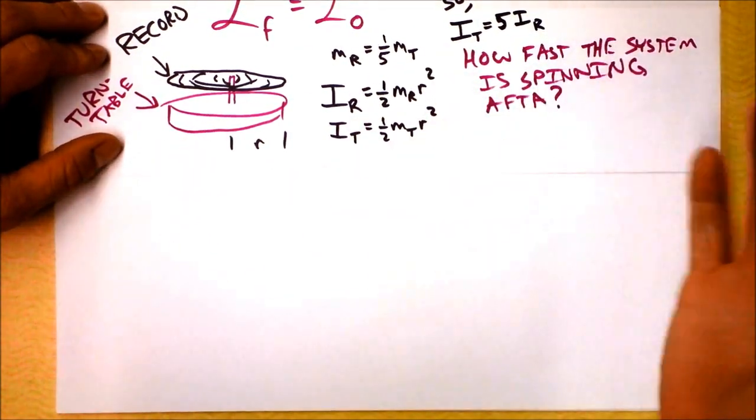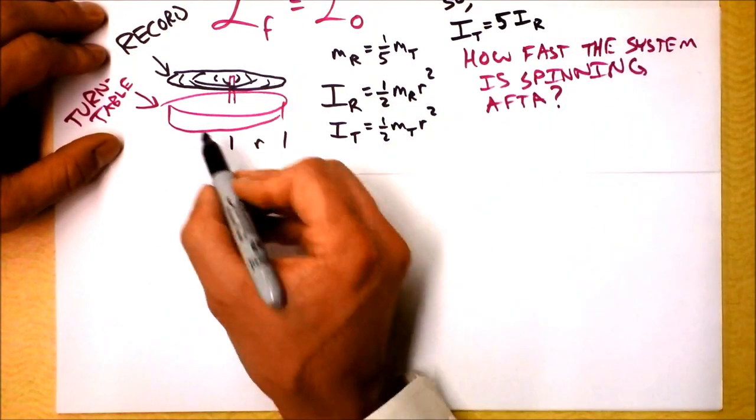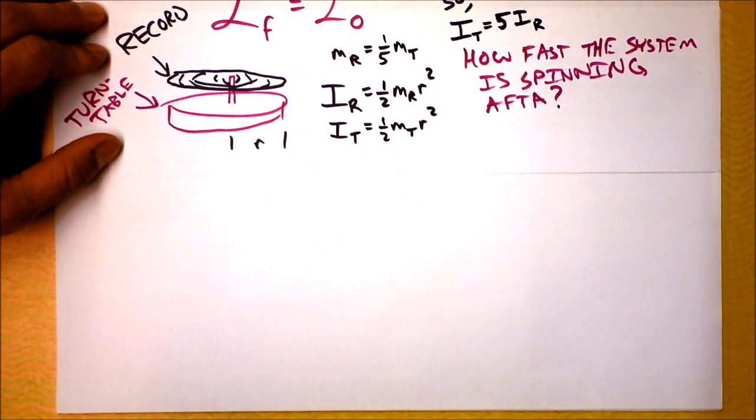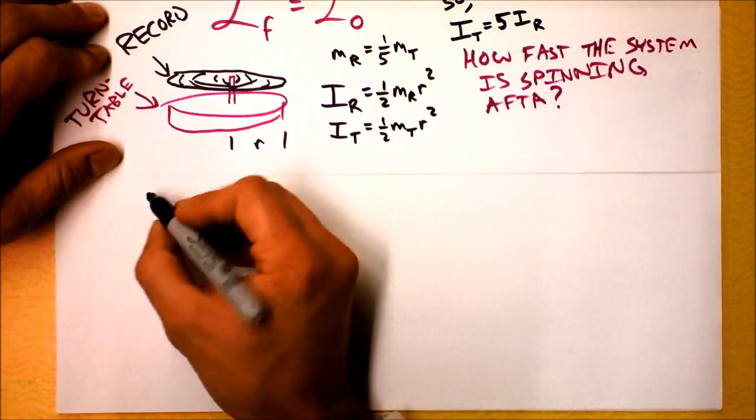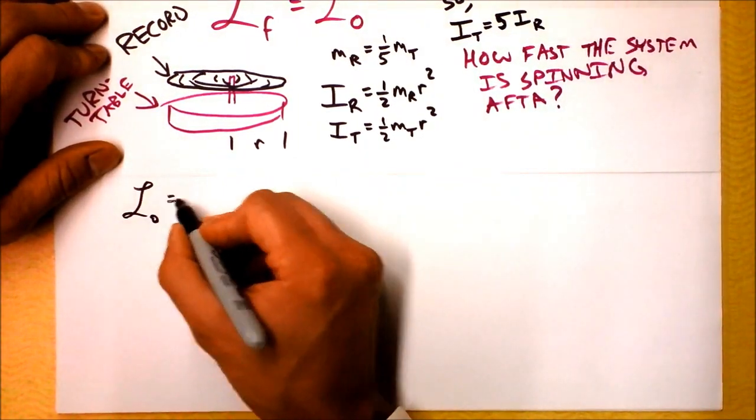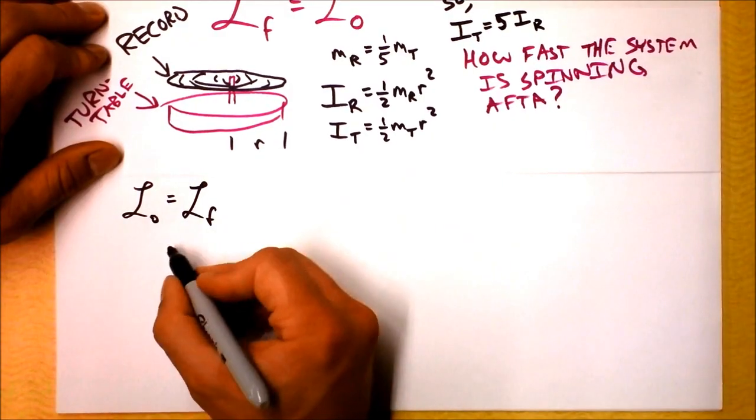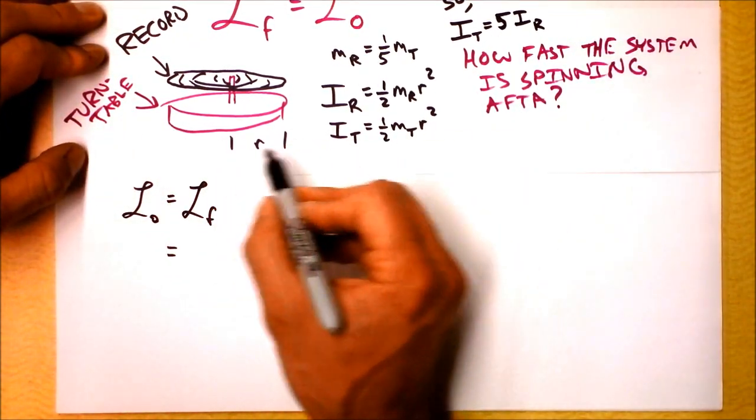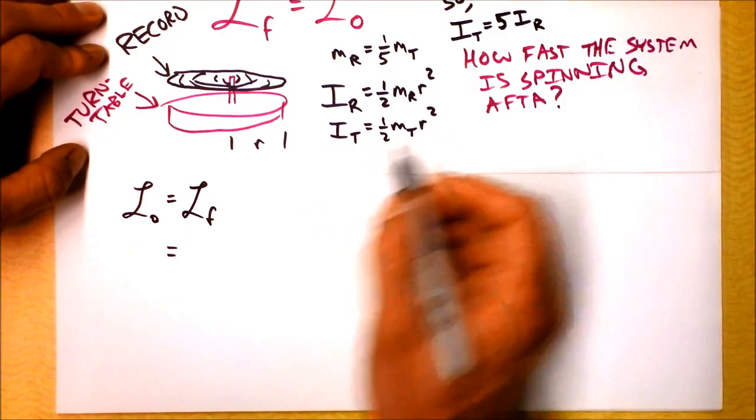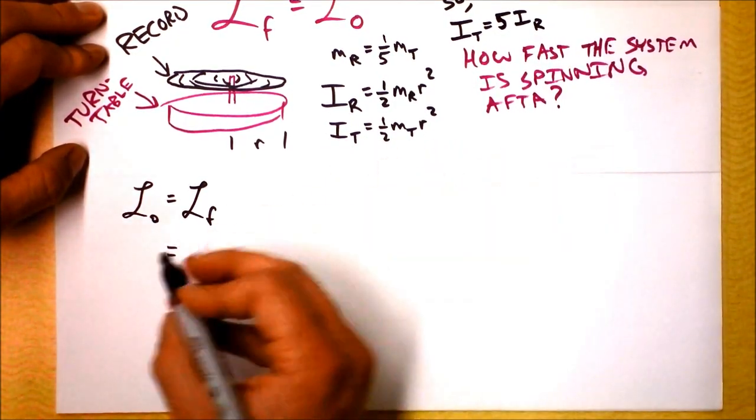But because there's been a collision, it won't be, the record won't be going quite as fast as the turntable was going, because of the conservation of angular momentum. So let's write that L0 equals L final, and we can think about the things that initially have angular momentum. Initially we've got the angular momentum of the turntable.